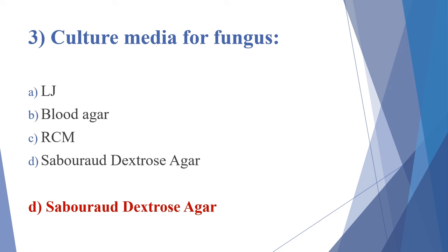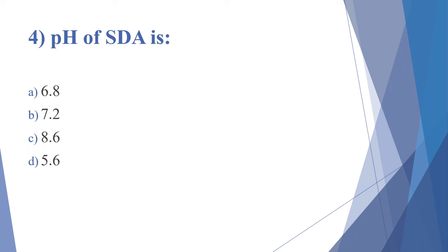Fourth question: the pH of SDA is — options: 6.8, 7.2, 8.6, 5.6. The answer is option D, 5.6. The pH of SDA is 5.6, which is slightly acidic. This slightly acidic pH enhances the growth of fungi and slightly inhibits the growth of bacteria.